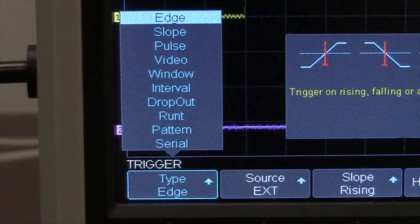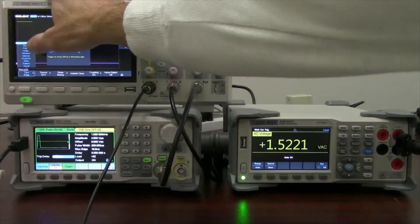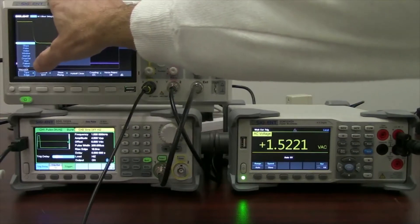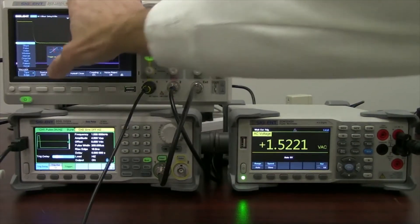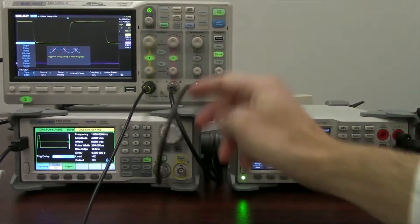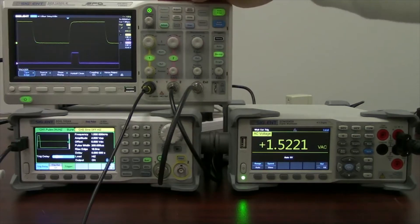So I'm going to go set up trigger, take a look at edge, slope, pulse, video, window. So it has all of the normal trigger types that a normal oscilloscope channel has. It's just going to be external and it's not going to plot it on the display. So we're not going to actually see anything on the display itself, but that's okay.